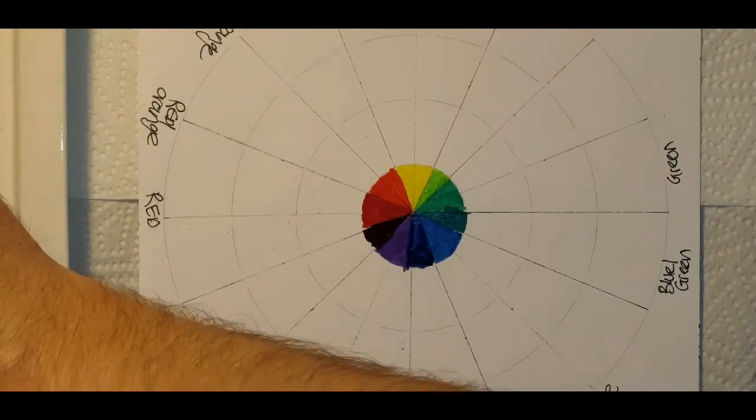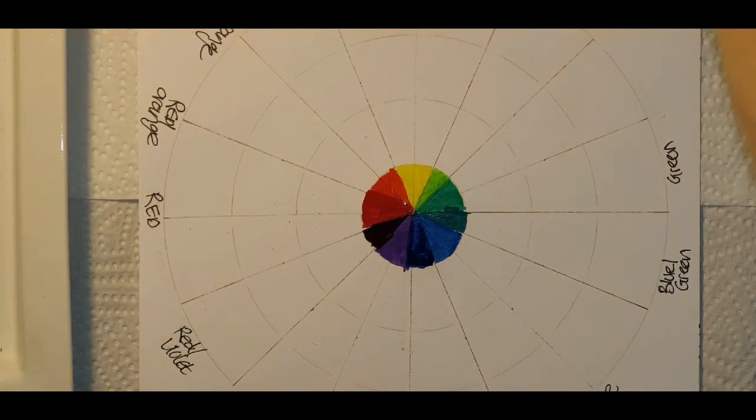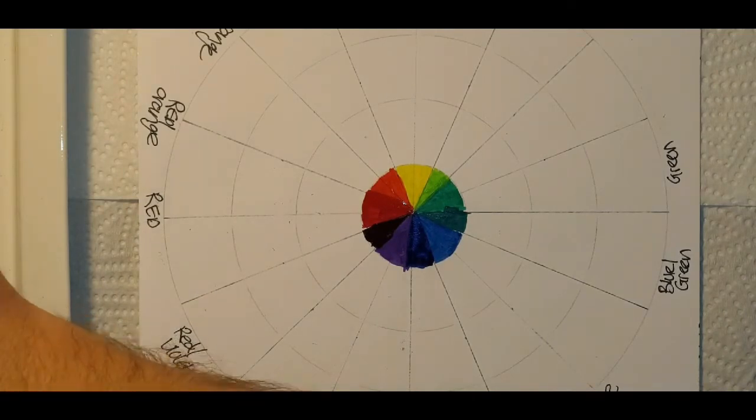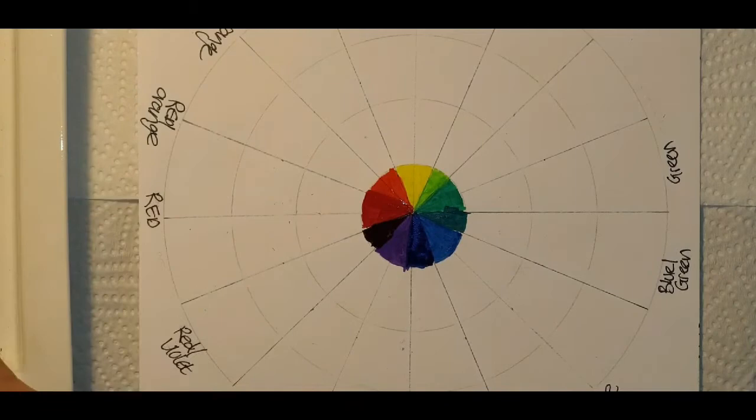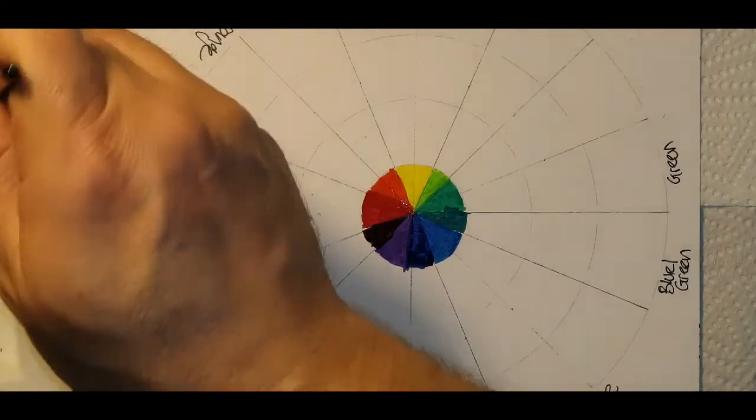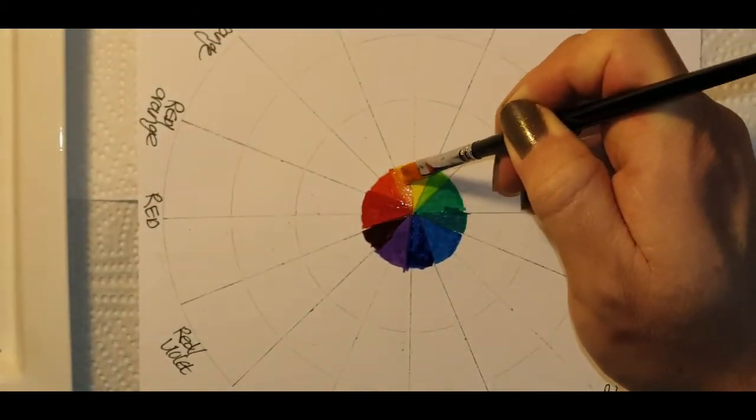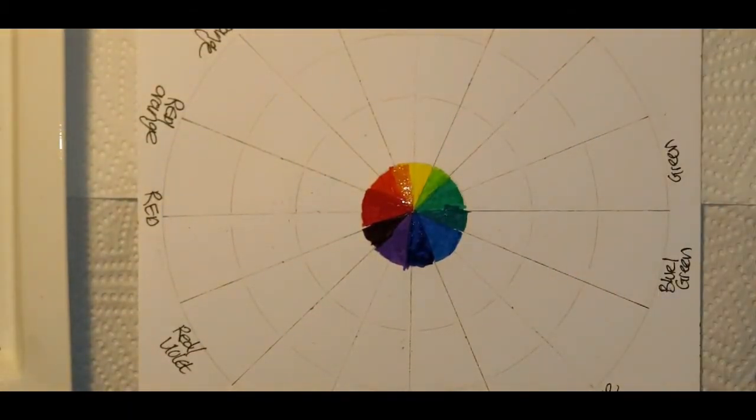If you add red to orange you get a red-orange. I'm having to create a little sliver of that color in there. And then if you add yellow to orange you get a yellow-orange. And there we have a complete color wheel in its most intense form.